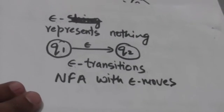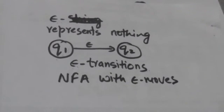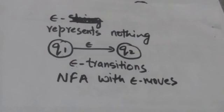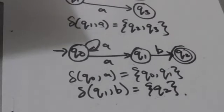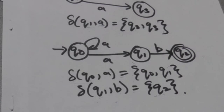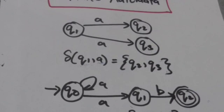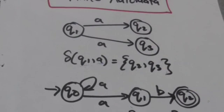NFAs which have empty transitions are called NFA with empty moves or empty transitions, and NFAs which don't have empty transitions are called NFA without empty moves or NFA without empty transitions. Thank you very much.